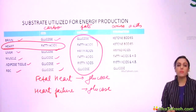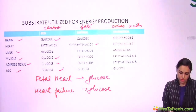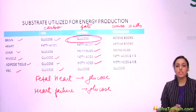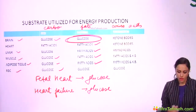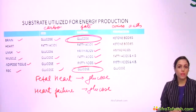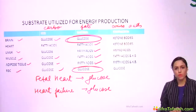In the fasting state, the main fuel is fats, so organs like the heart, liver, muscle, and adipose tissue are all using fatty acids. But the brain is still on glucose, because fatty acids cannot cross the blood-brain barrier. RBCs are also on glucose, because fatty acids cannot be broken down in RBCs — beta oxidation of fatty acids occurs in mitochondria, but RBCs have no mitochondria.